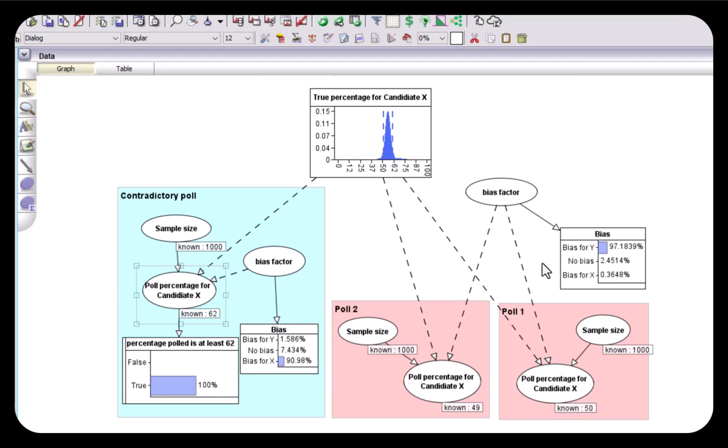But there's an even higher probability, 97.2 percent, that these polls are biased in favor of Y. Now the reason there's a higher probability that polls one and two are biased than the contradictory poll is because we assume that these polls suffer from the same common bias. But what if we know that the conflicting poll is unbiased?